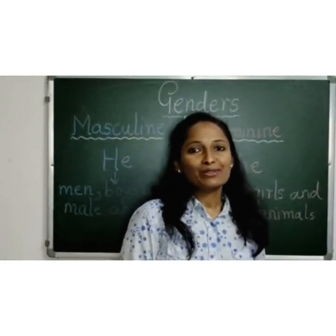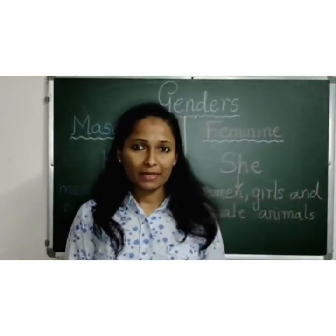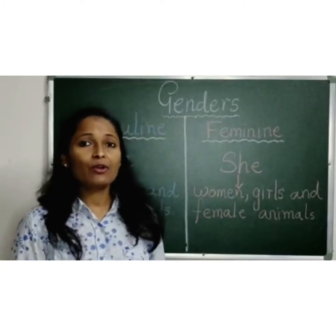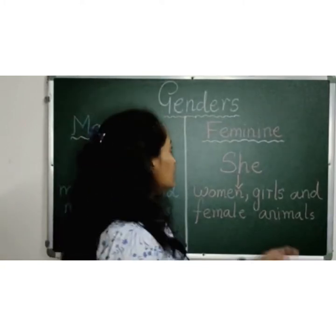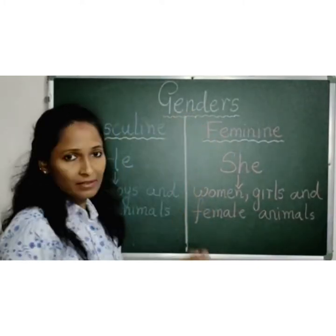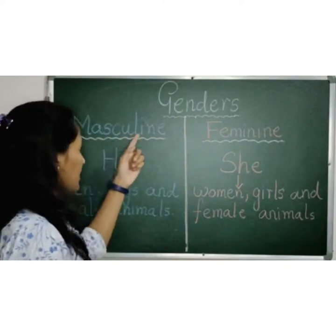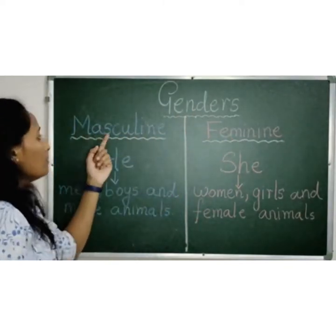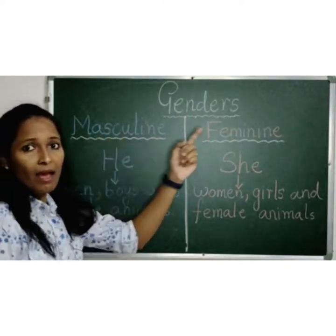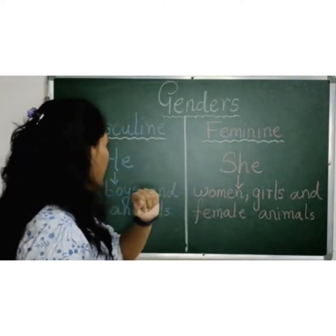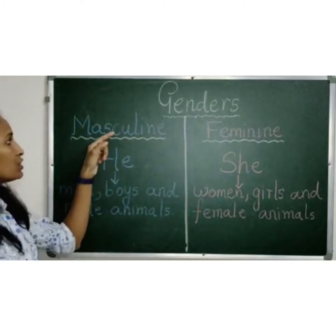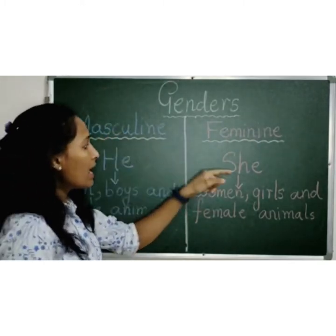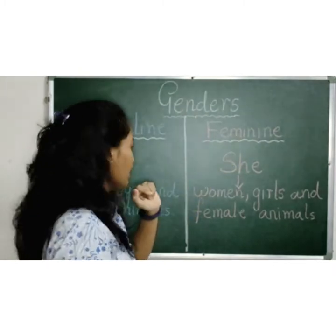Welcome back to Joey's Academy. Today, children, we are going to learn about genders — masculine and feminine, male and female. He is used for masculine and she is used for feminine.